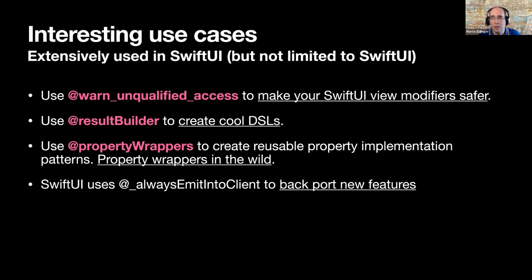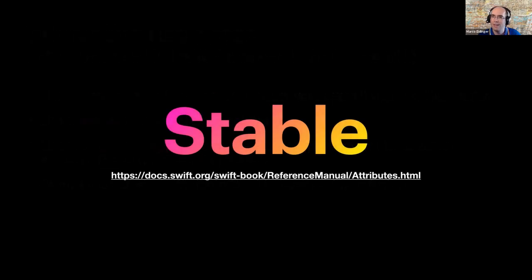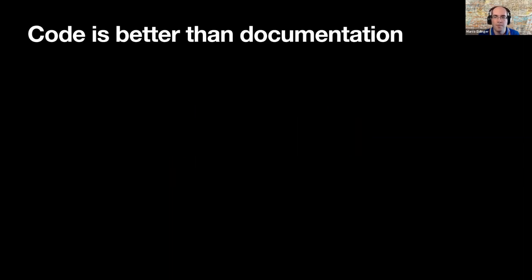There's an underscore notation, and two notions of attributes overall. Stable, official attributes are documented on swift.org in the reference manual under the language's descriptions of declarations and types — they went through the Swift evolution process and are well defined. But there are also other kinds. Code is always better than documentation because documentation can get out of sync, so I want to show you where attributes are actually defined.